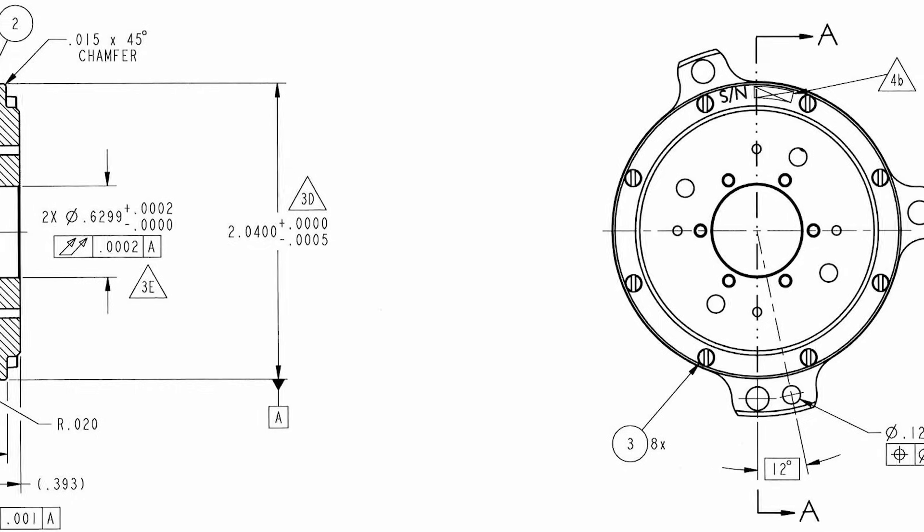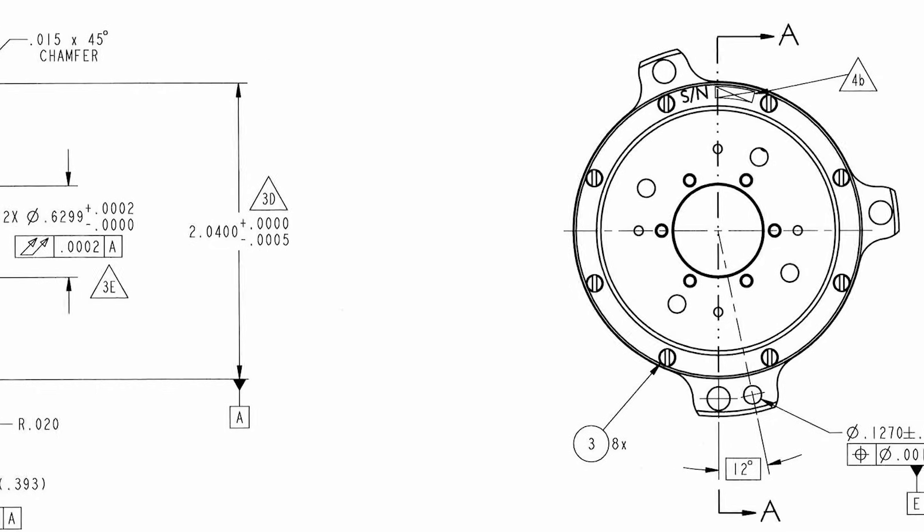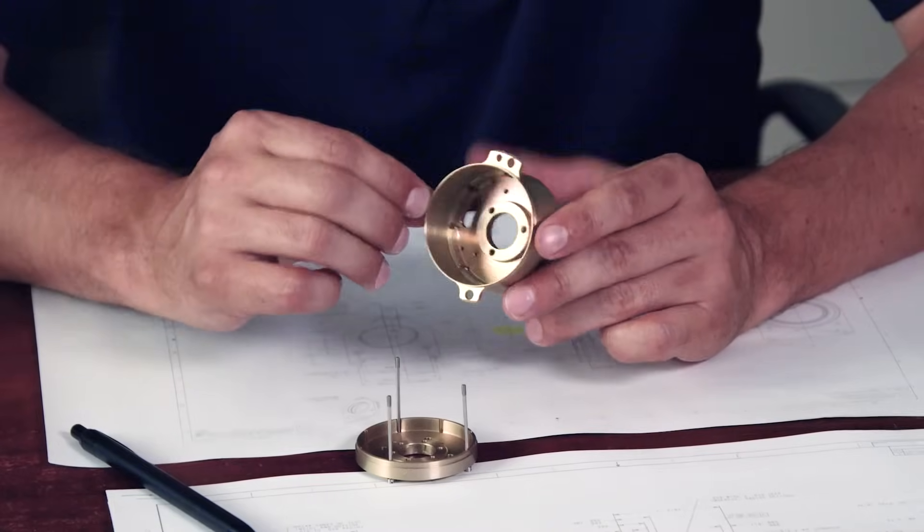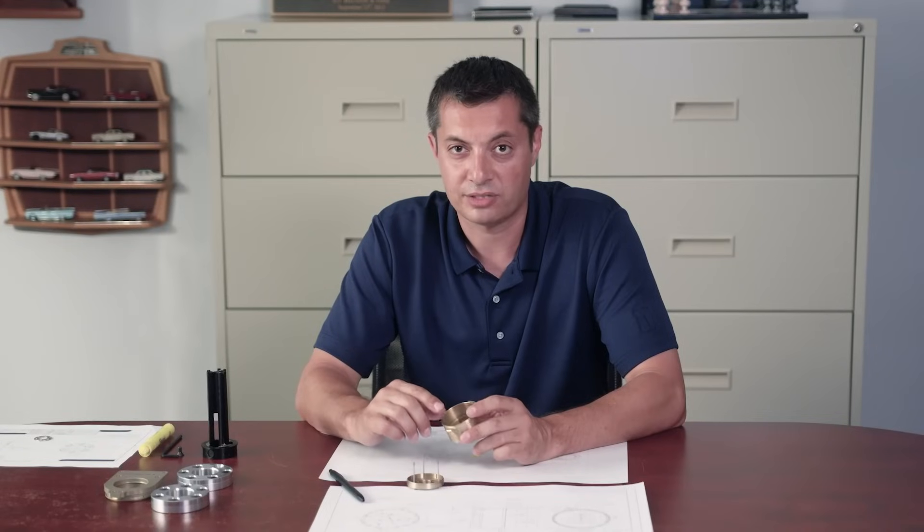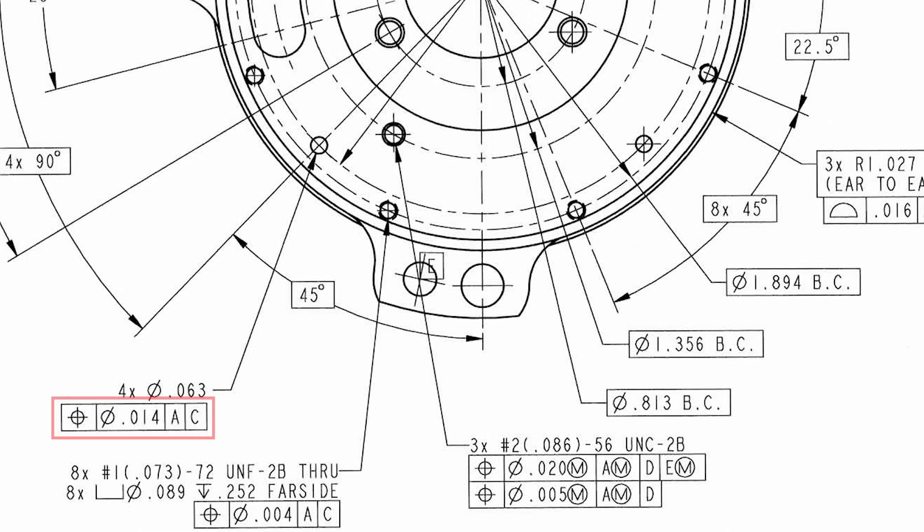To better understand the tolerance and the precision we're dealing with, think of a piece of your hair. Thickness of your hair is 0.003 or three thousandths thick. So when we're talking about tolerance, 0.014 is about four pieces of your hair put together.